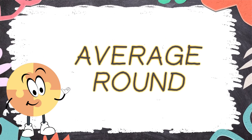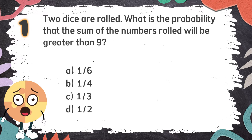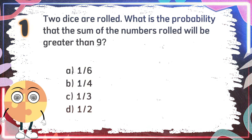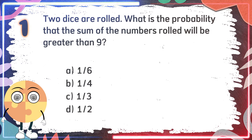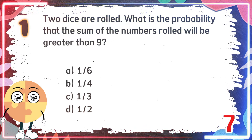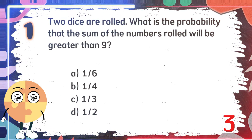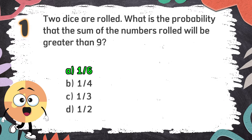Average round. Number 1. Two dice are rolled. What is the probability that the sum of the numbers rolled will be greater than 9? The choices are A. 1 out of 6, B. 1 out of 4, C. 1 out of 3, D. 1 out of 2. The correct answer is A. 1 out of 6.